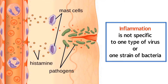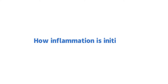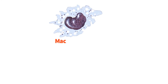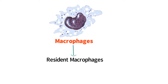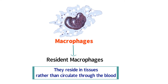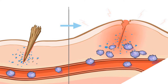To understand how inflammation is considered immediate, we will now examine how inflammation is initiated. Remember that macrophages are often known as resident macrophages, meaning they reside in tissues rather than circulate through the blood. When a tissue injury occurs, such as a cut, the particles of damaged cells are detected by resident macrophages residing in the same tissue where the injury occurred.